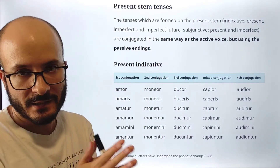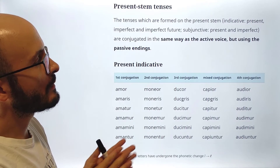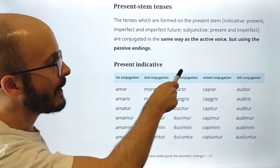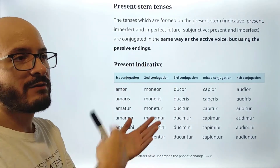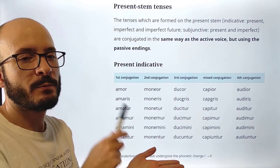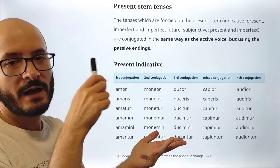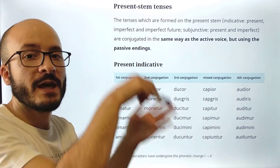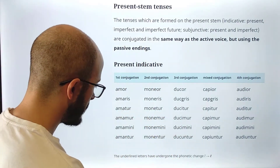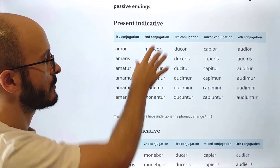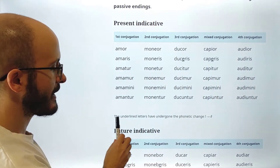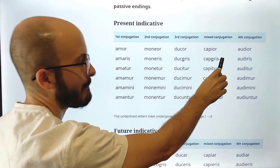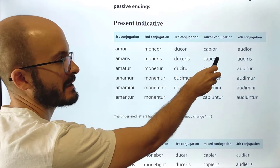Now, present stem tenses. The tenses formed on the present stem — indicative present, imperfect, future; subjunctive present and imperfect — are conjugated in the same way as the active voice, but using the passive endings. So for the imperfect, for example, we use the present stem, the morpheme, and now the passive endings instead of the active endings. Here you can see the present indicative passive. The underlined letters have undergone the phonetic change: short 'e' becomes short 'a'. So 'duceris' and 'caperis' — you see the 'a' because of the change we just mentioned.